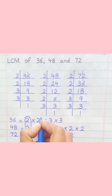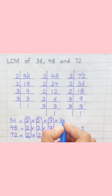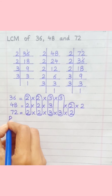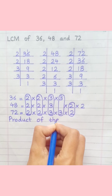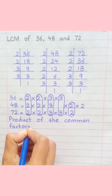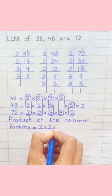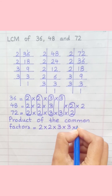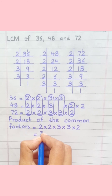Loop the factors that are common to all of the given numbers. Product of the common factors: 2 multiply 2 multiply 3 multiply 3 multiply 2, equal 72.